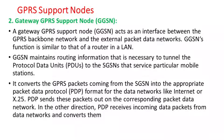Gateway GPRS Support Node (GGSN): It acts as an interface between the GPRS backbone network and external packet data networks. Its main function is similar to that of a router in a LAN. GGSN maintains routing information necessary to tunnel Protocol Data Units (PDUs) to the SGSN serving a particular mobile station. It converts GPRS packets coming from the SGSN into the appropriate Packet Data Protocol (PDP) format for data networks like the internet or X.25, and in the other direction, receives incoming data packets and converts them accordingly.